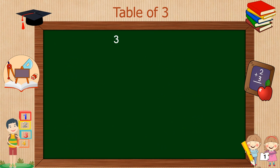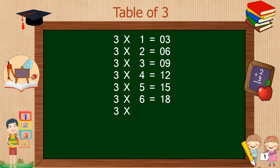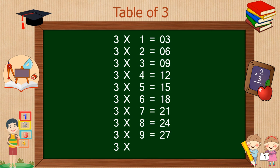Table of 3: 3 times 1 is 3, 3 times 2 is 6, 3 times 3 is 9, 3 times 4 is 12, 3 times 5 is 15, 3 times 6 is 18, 3 times 7 is 21, 3 times 8 is 24, 3 times 9 is 27, 3 times 10 is 30.